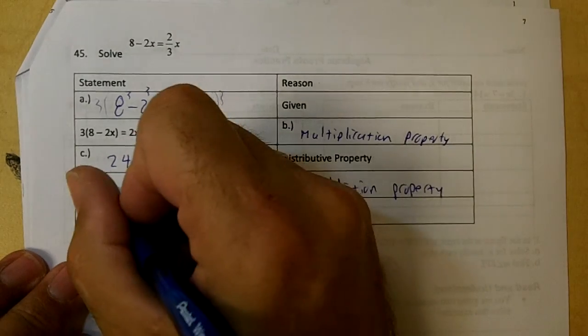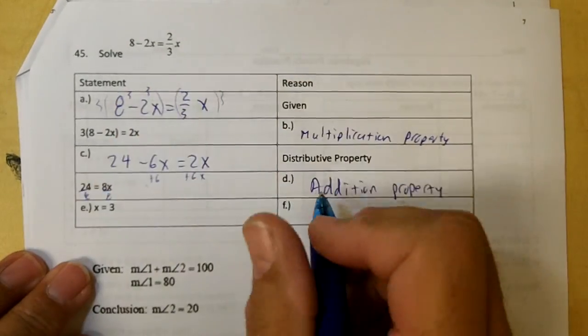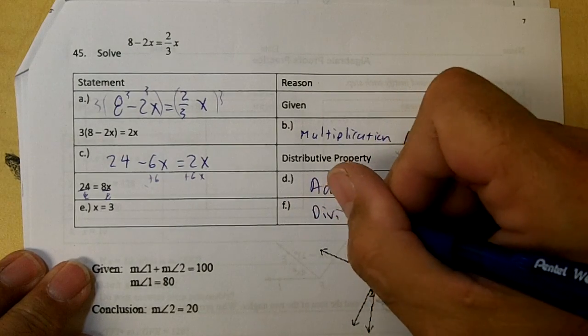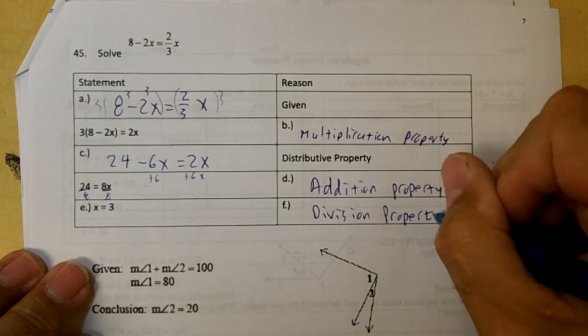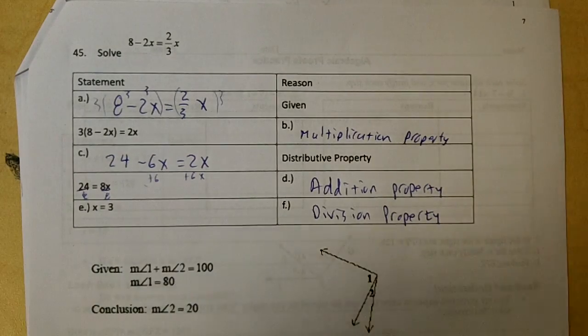And then lastly, we divided by 8, didn't we? So that's our division property. That's all you got to write, people. Okay. Thank you.